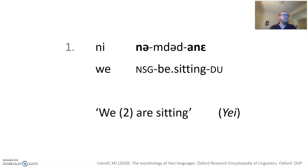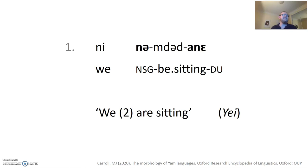There are two affixes, both of which give us information about number. The prefix n- says that it's a non-singular event — that is, there is more than one person — while the suffix -ane is a dual marker, indicating precisely two. So if you know this language and you see this suffix, you know there are two people. Therefore, the information that it's non-singular is essentially redundant. This is what I mean when I talk about redundant morphology.